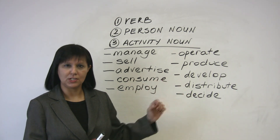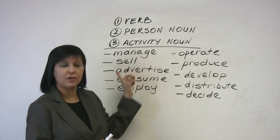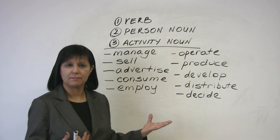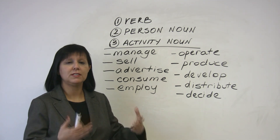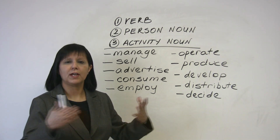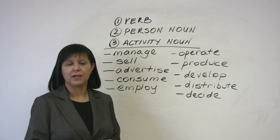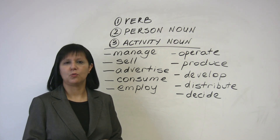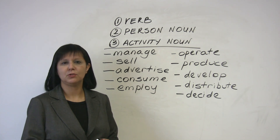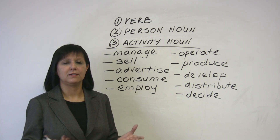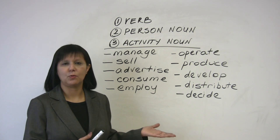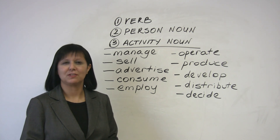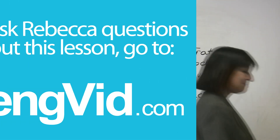By using this simple strategy, instead of learning, for example, ten words on the board just now, you have learned thirty words. You can imagine if you did this every time you learned a word, your vocabulary would grow much faster than it would otherwise. If you'd like to practice a little bit of this, please go to our website www.engvid.com. We have a free quiz where you can see how well you've learned this and some other wonderful ideas for you. Thanks very much. Bye for now.